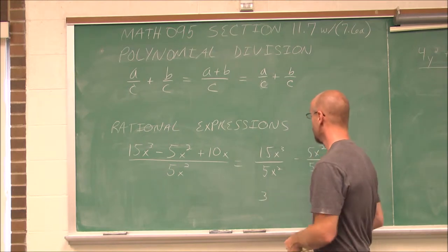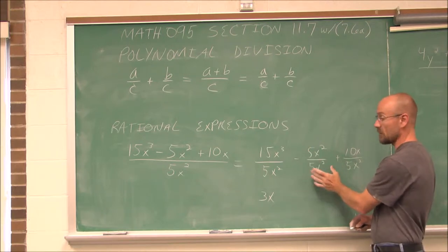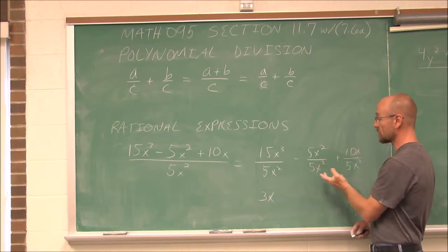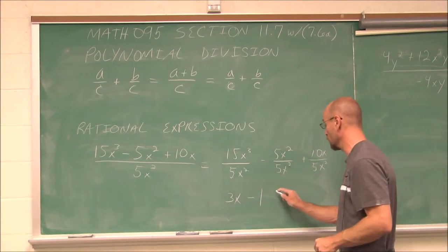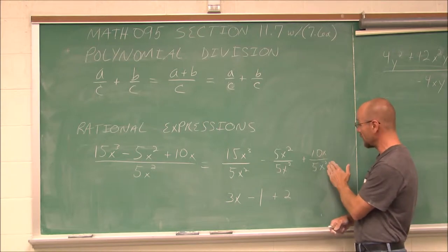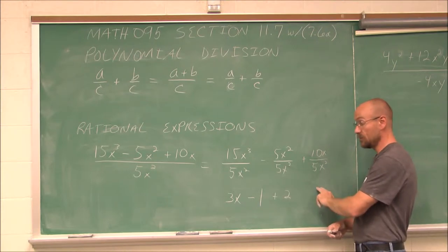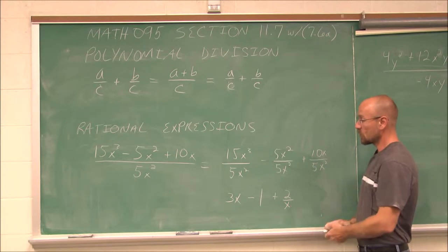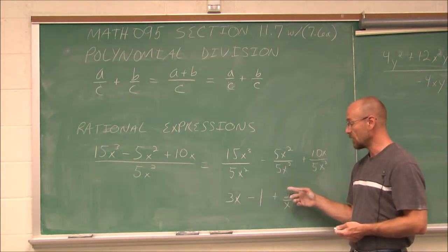15 over 5 is 3, and x cubed over x squared is x. For the next term, negative 5x squared over 5x squared — anything divided by itself is 1, so that's a shortcut. Or we could reduce it one piece at a time: 5 over 5 is 1, x squared over x squared is 1, giving us negative 1. Then 10 over 5 is 2, and x over x squared — canceling one x leaves one x in the denominator, or using rules of exponents, the exponent is 1 minus 2, which is negative 1, meaning it goes to the denominator. So the result is 3x minus 1 plus 2 over x.